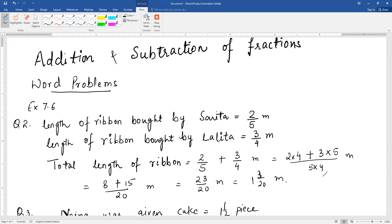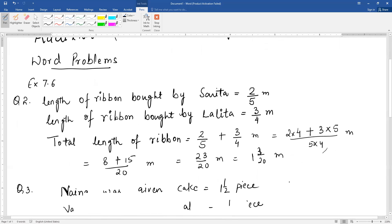Now coming to the next part, that is question 3. Naina was given one and a half piece of cake and Najma was given one by three piece of cake. These are mixed fractions. What is the total amount of cake given to them?